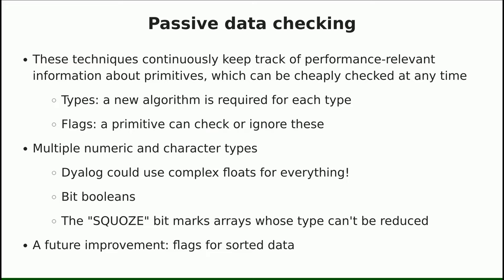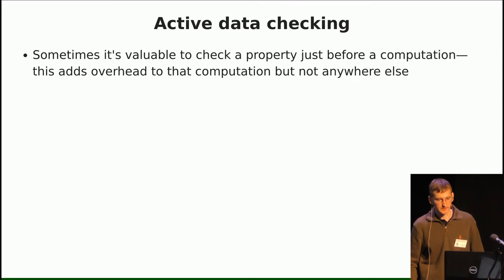Right now we don't put flags on arrays, but the one I really think we should do is sorted data — it has a much bigger impact on performance than you'd expect. For example, 'key' is slow without this flag, but with it all it has to do is a linear scan. Search functions can also be faster: if you have a large sorted array and want to look up a few elements, rather than hashing the whole array you can do a binary search.